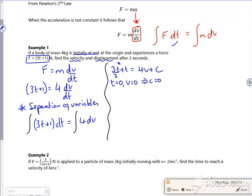So I know that my velocity, so I've got 3t squared over 2 plus t is 4v. So I know that my velocity will be 3 over 8t squared plus a quarter of t. So that's my velocity done.